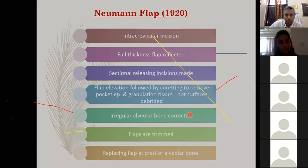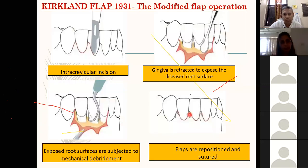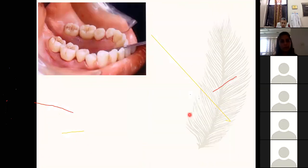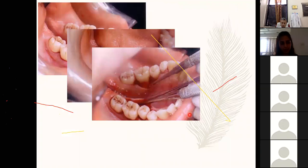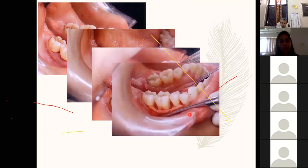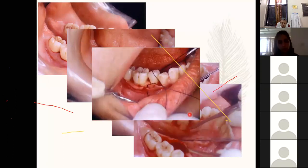Kirkland in 1931 proposed the modified flap operation. This was a pocket reduction technique. He stressed maintaining as much tissue as possible with minimal tissue resection. An intracrevicular incision was proposed, the gingiva retracted to expose the diseased root surface, exposed root surfaces were subjected to mechanical debridement, and the flaps were repositioned and sutured. It particularly helped in the anterior region and areas of aesthetic concern, as minimal gingival recession was expected, and also helped in areas where regeneration was desired.